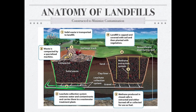Once a landfill is full and no longer useful, the owners cap it — they put a layer of plastic and probably clay over the top to seal everything inside. They also install pipes to collect and vent any methane produced as the waste decomposes. The landfill is built with a hill over the top so that rain runs off to the sides rather than down into it. Leachate continues to be collected and treated. There is also a groundwater monitoring well, which goes down into any aquifers in the area to make sure leachate from the landfill is not getting into the groundwater supply.